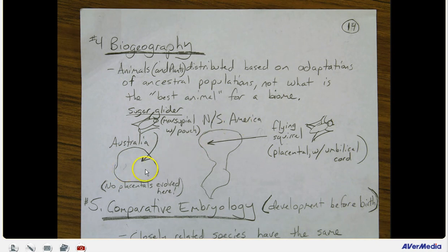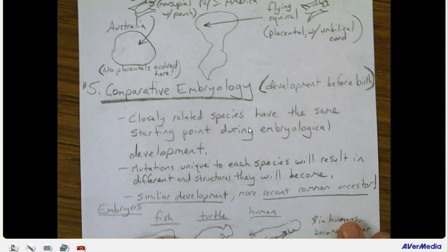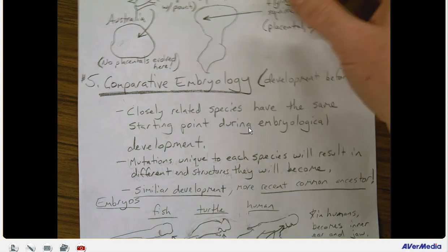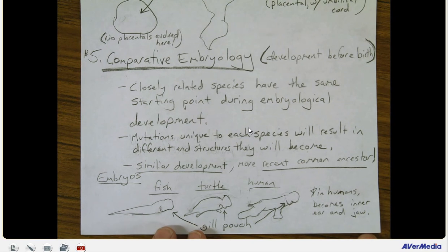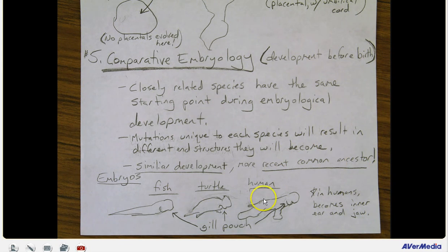In evolutionary theory, we explain this as trapped populations that evolved independently of the source population they came from. Australia moved away with tectonic plates over 60 million years ago during the split of Pangaea. Comparative embryology: development before birth is embryology. Closely related species have the same starting point during embryological development. Mutations unique to each species result in different structures they will become. Similar development means a more recent common ancestor. For example, the gill pouch is shared by turtles and humans — but in humans, that gill pouch becomes the ear and lower jaw.